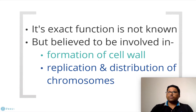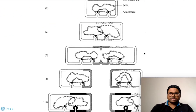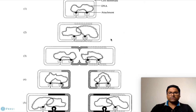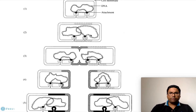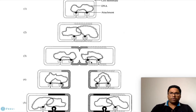The exact function of mesosomes is still unknown, but they are believed to be involved in cell wall formation as well as in the replication and distribution of chromosomes. As seen in the diagram, mesosomes serve as the attaching point for the bacterial chromosome, where it replicates. The two copies made by the bacterial replication machinery are then distributed with the help of mesosomes, forming two individual daughter cells from the parent bacterial cell.